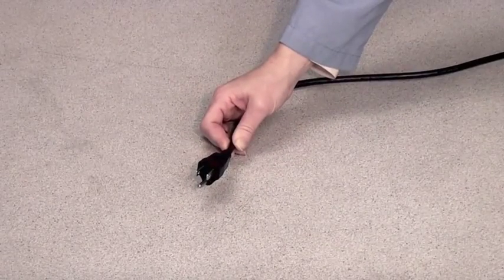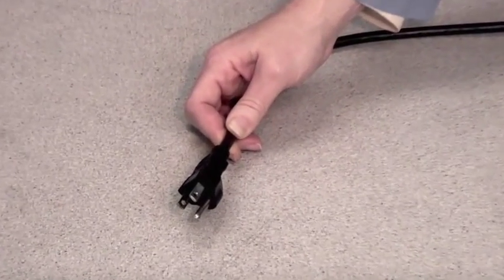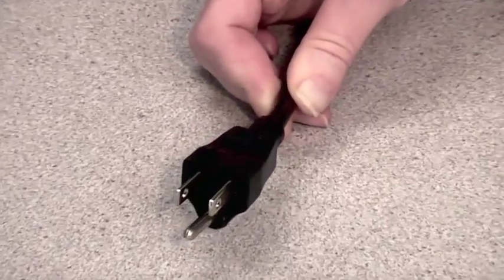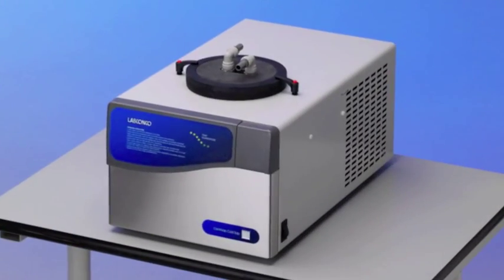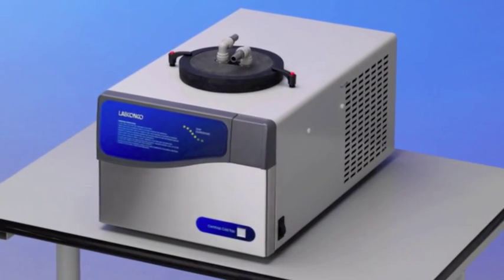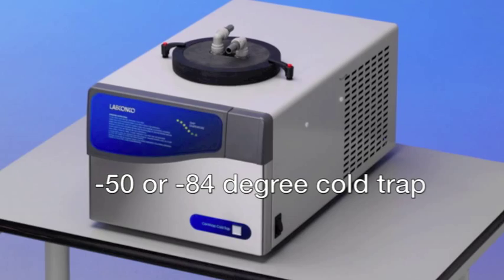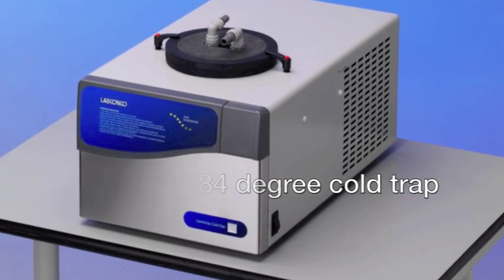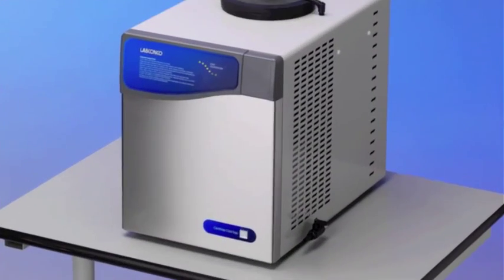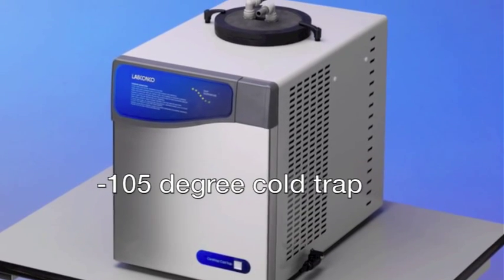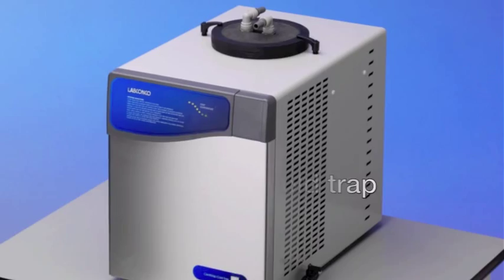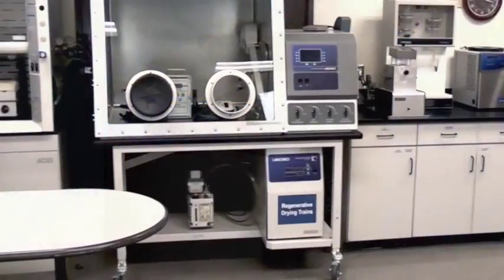The Centravap requires a dedicated grounded 15 amp circuit for 115 volt models and 8 amps for 230 volt models. The 115 volt negative 50 degree and negative 84 degree cold traps also require a 15 amp dedicated circuit. The negative 105 degree cold trap requires a 20 amp dedicated circuit. 230 volt models require a circuit rated for 8 amps.